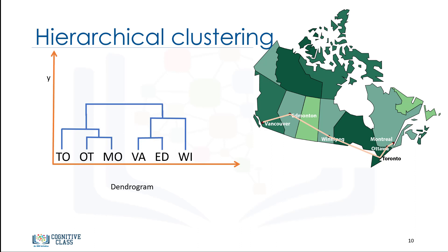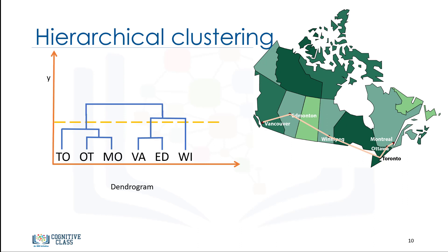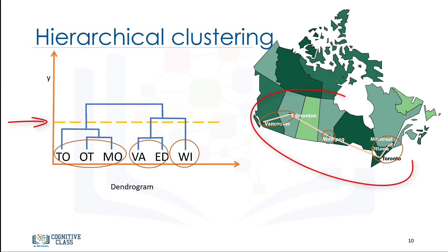Hierarchical clustering does not require a pre-specified number of clusters. However, in some applications we want a partition of disjoint clusters, just as in flat clustering. In those cases, the hierarchy needs to be cut at some point. For example, cutting at a specific level of similarity, we can create three clusters of similar cities.